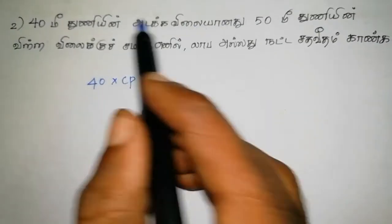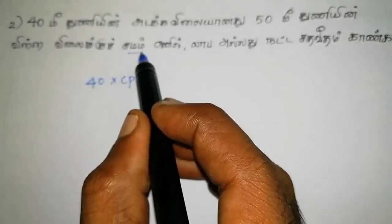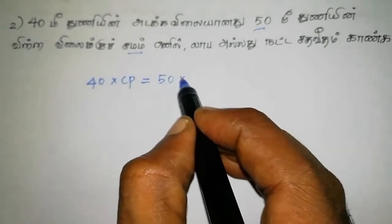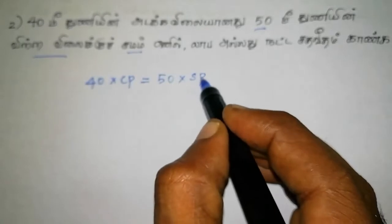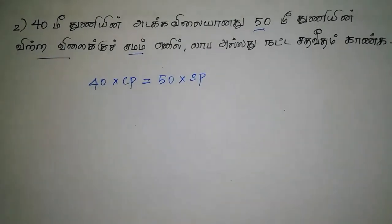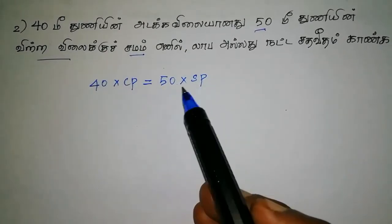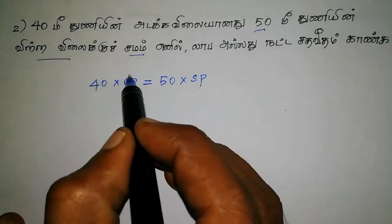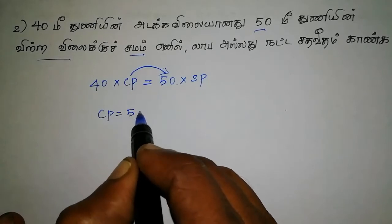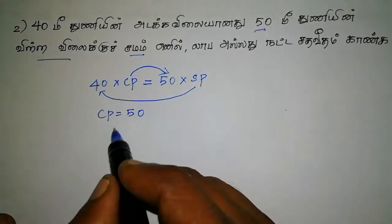Let's look at the next question. 40 meters of water is combined with 90 meters of water. So 40 meters of water is combined — this is 90 meters of water. The cost price is 50. What is the selling price? 40.